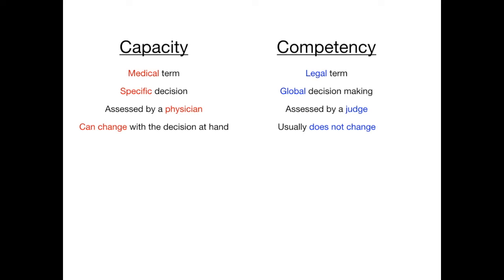The differences between capacity and competency are really important and high yield. To quickly summarize: capacity is medical, competency is legal. Capacity is about a specific decision, competency tends to be more global decision making. Capacity is assessed by a physician, competency by a judge. Capacity can change depending on the decision at hand or the clinical state of the patient, whereas competency usually doesn't change — it's ruled on by a court and stays that way until there's a further hearing.